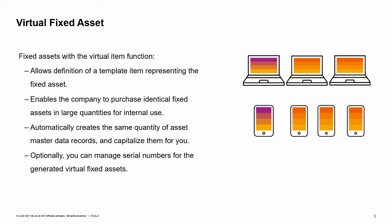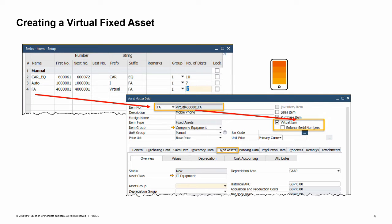Let us see how to work with virtual fixed assets. The virtual item checkbox is available only if you use numbering series for the asset master data. Using the numbering series enables the system to create several new assets when a virtual item is purchased in a single transaction row. Note that both master data — that is, fixed asset and items — use the same numbering series setup.